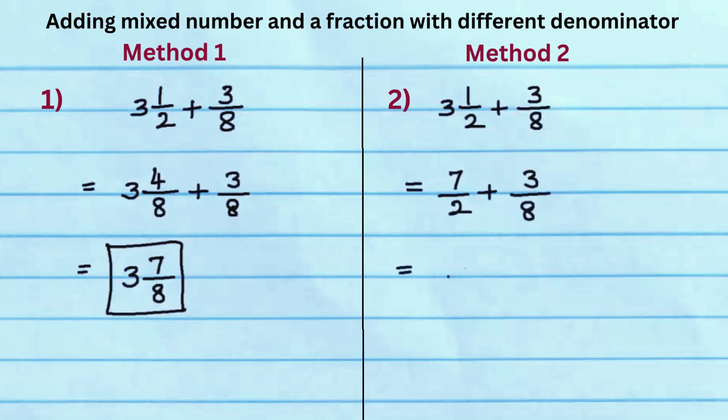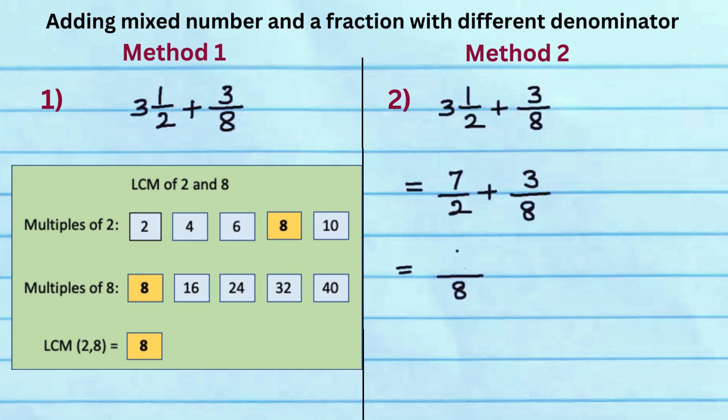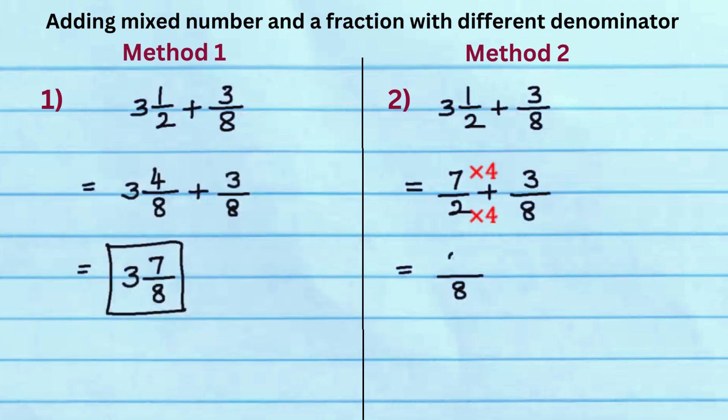Since denominators are different, find the LCM. LCM of 2 and 8 is 8. Rewrite the fraction using common denominator 8 to get 28 over 8. Since the denominator is already 8, keep the fraction 3 over 8 as is.